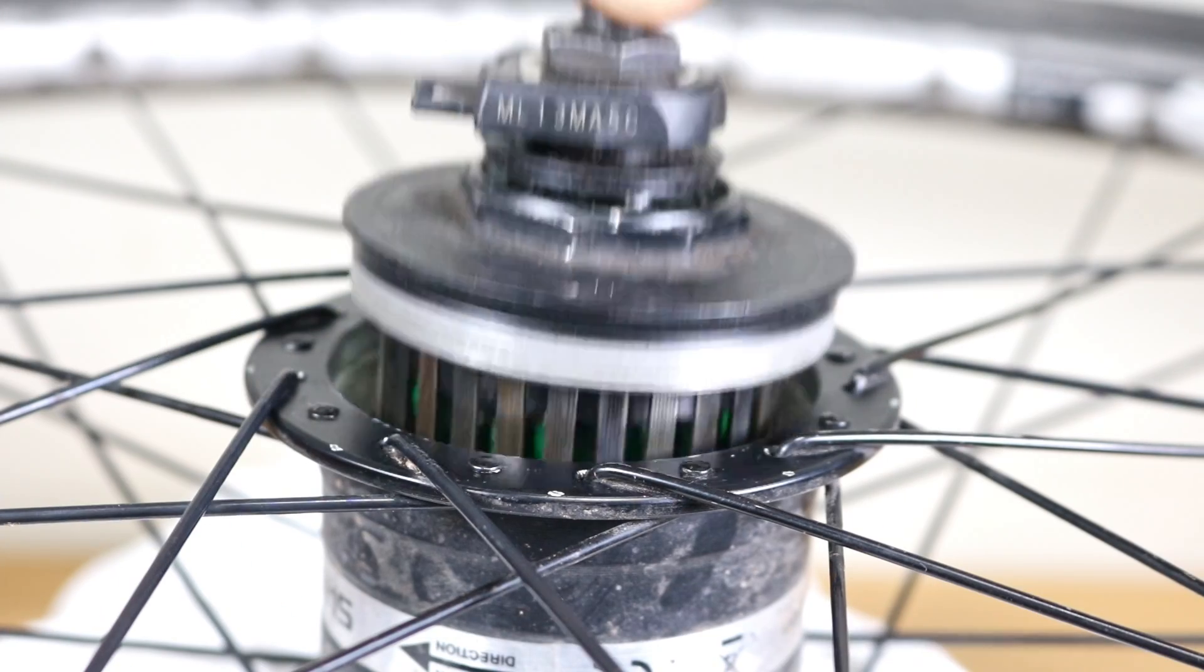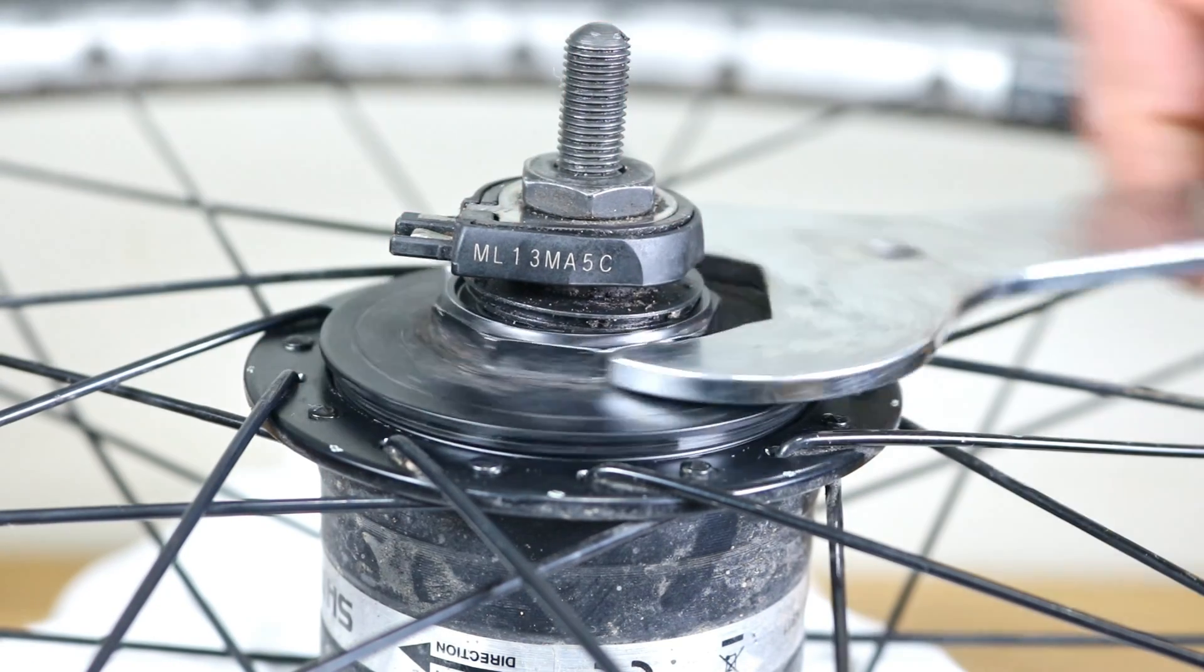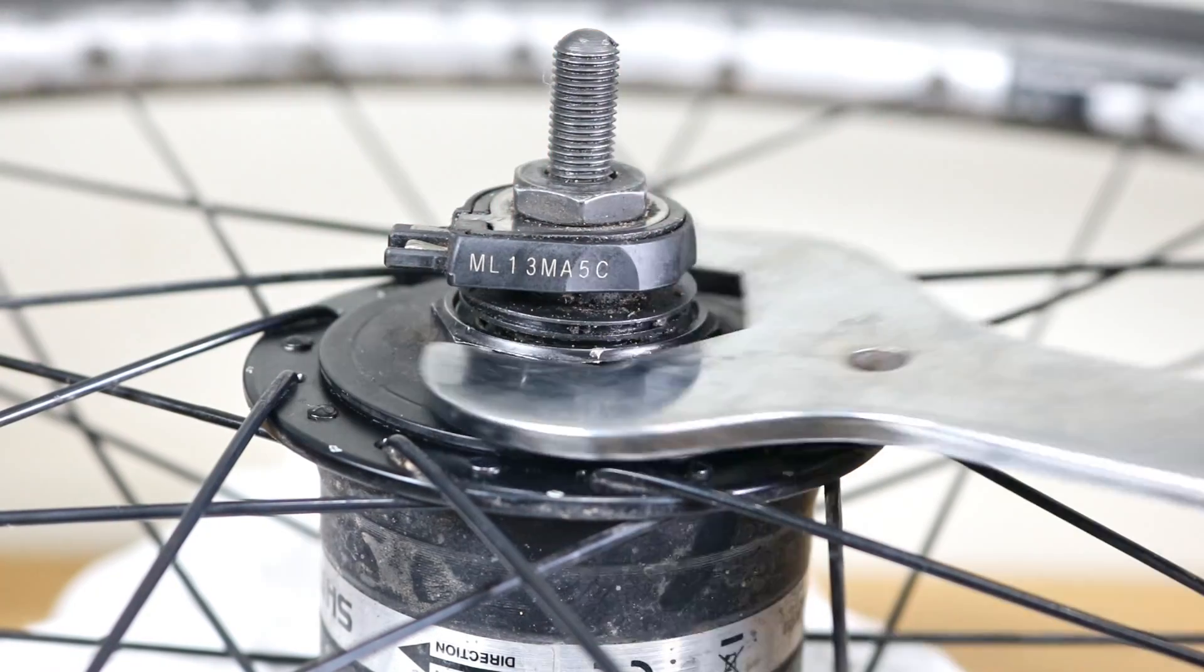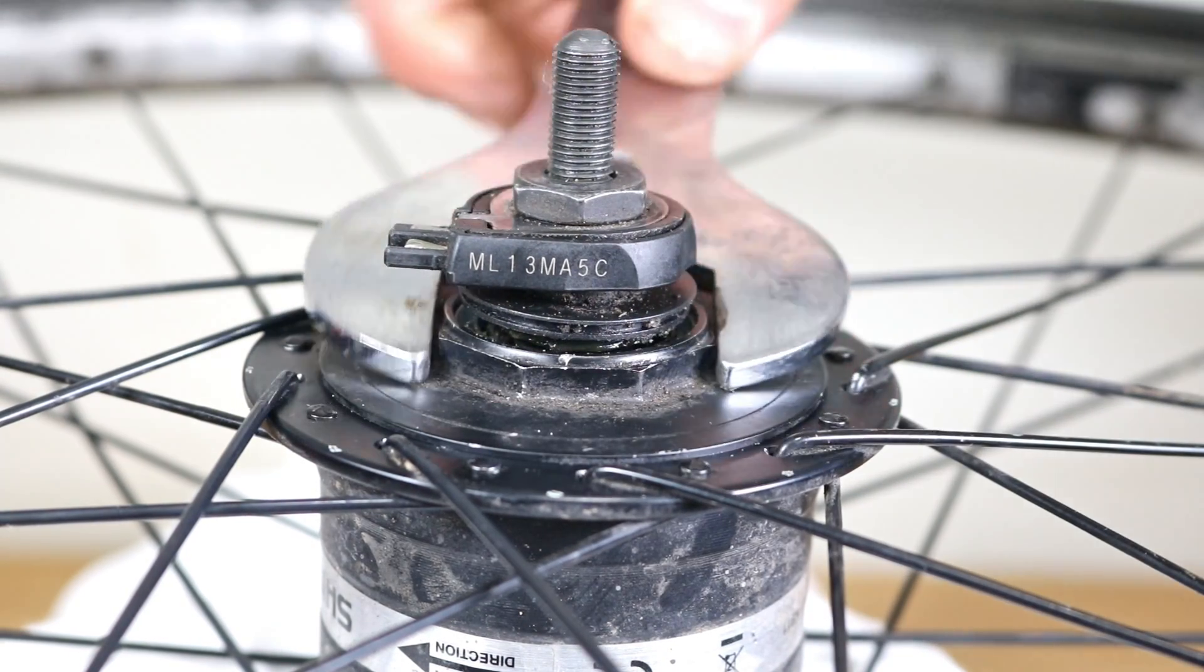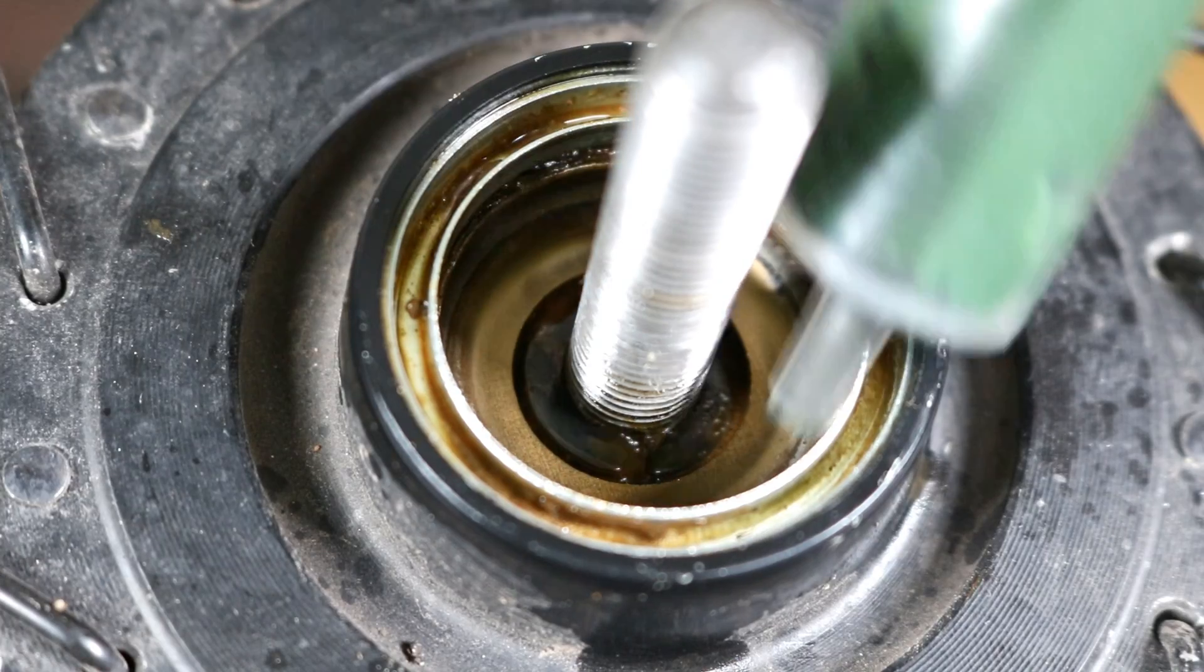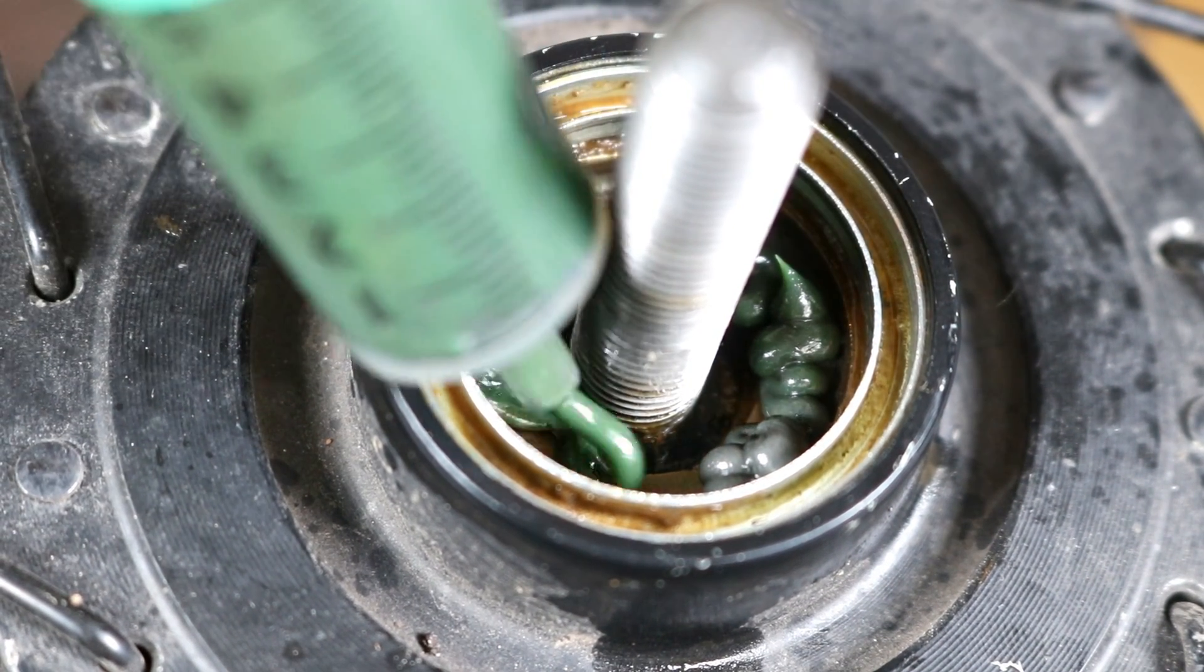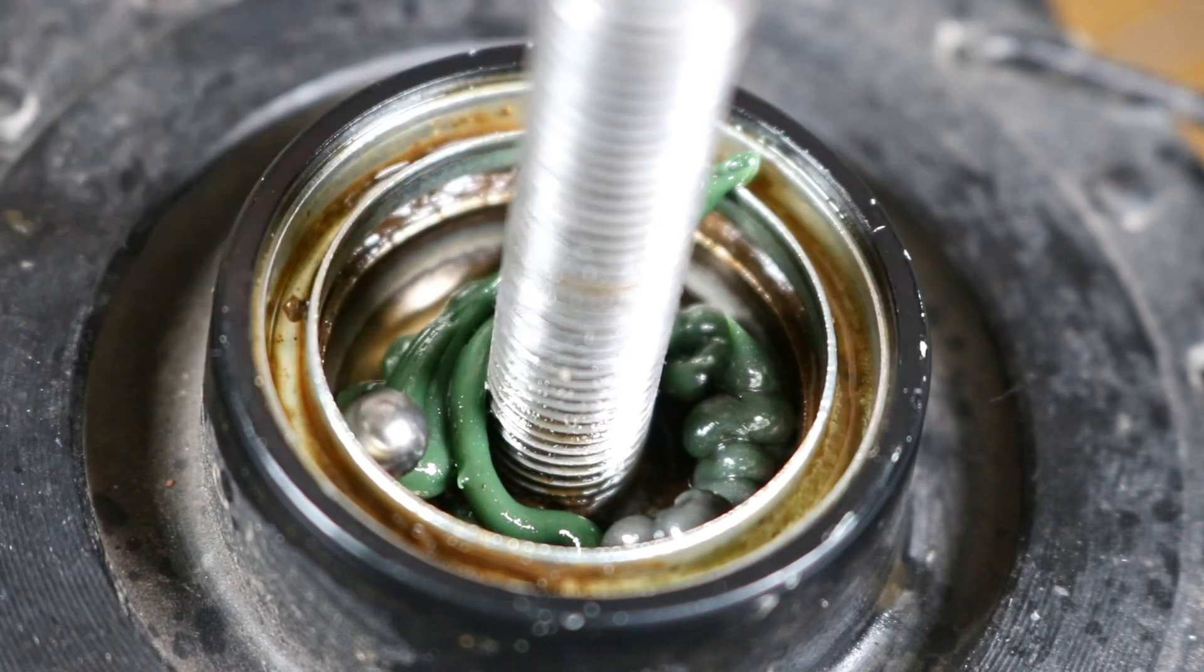Slide the armature and axle back into the hub. Tighten the armature cover by turning it clockwise until it's secure. Apply grease to the cup and put the bearings back in.